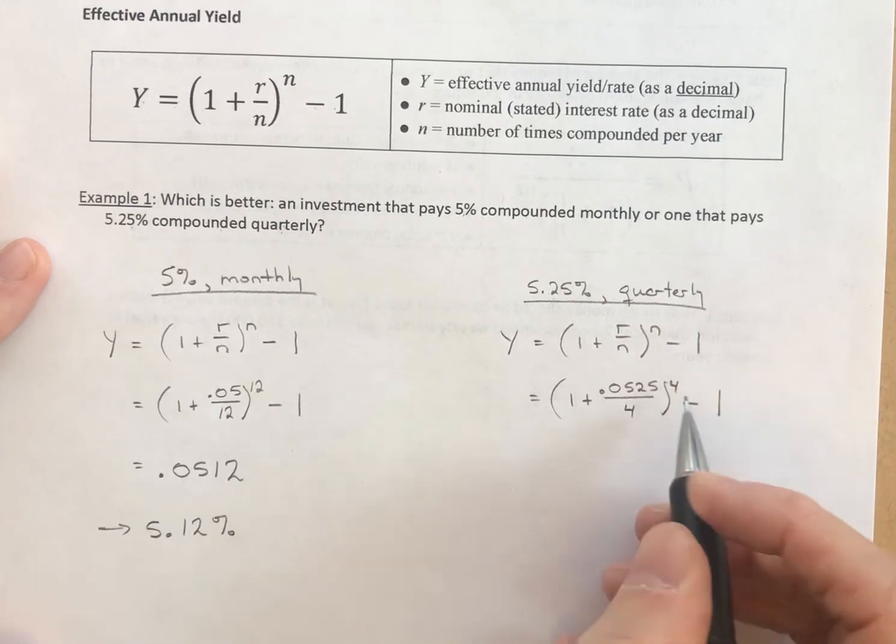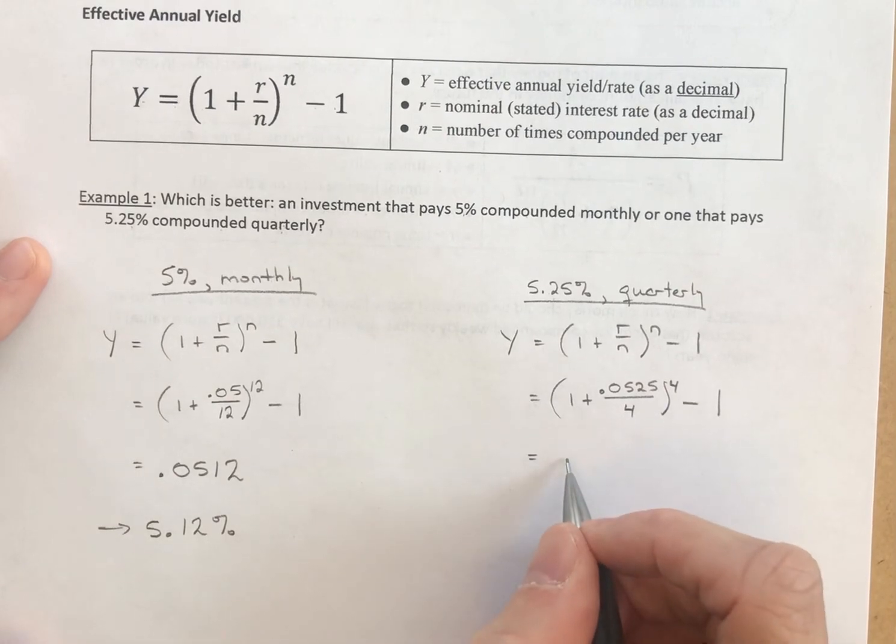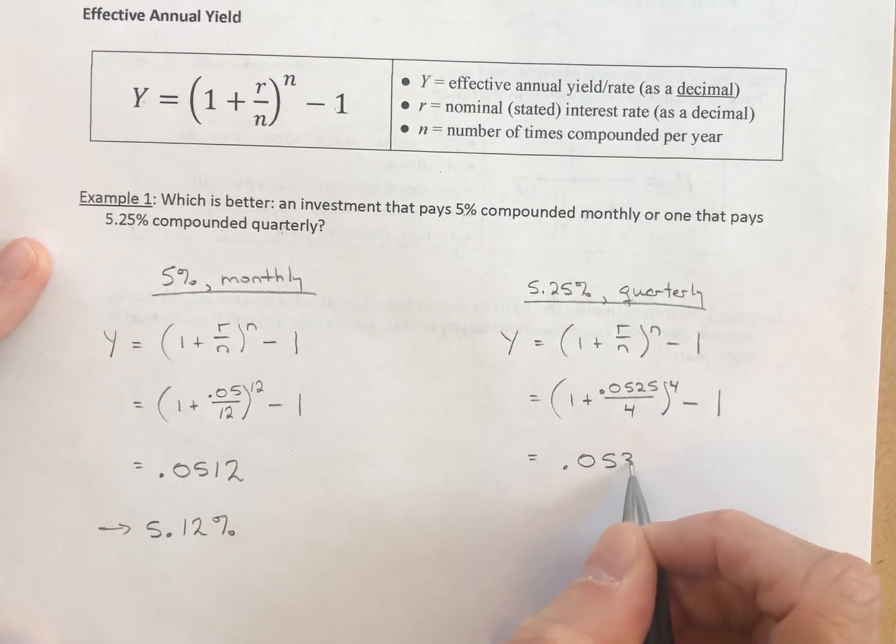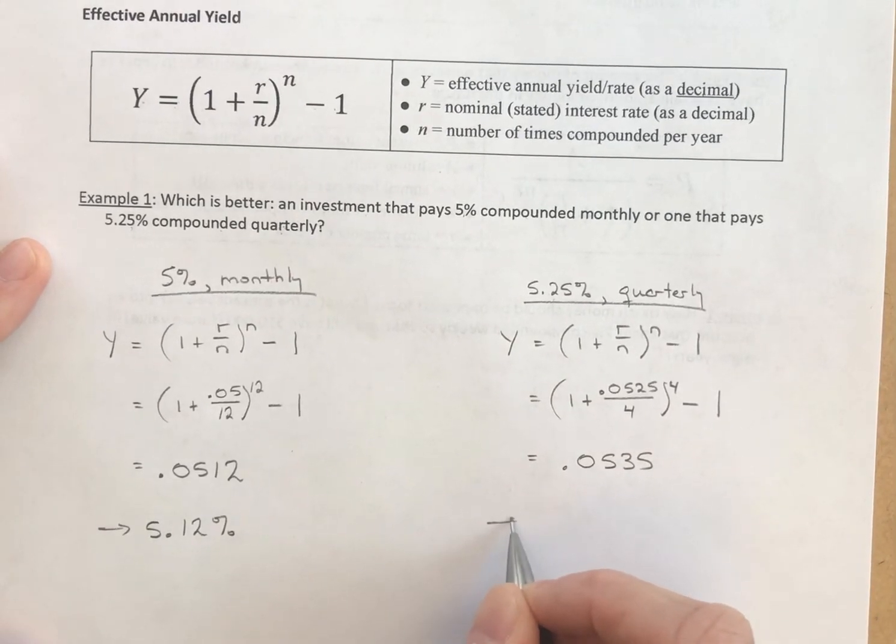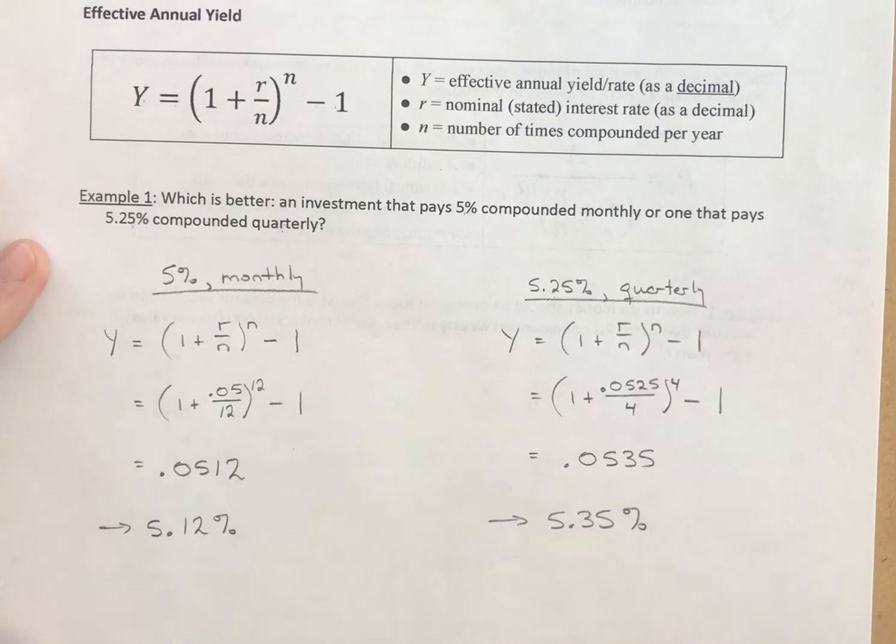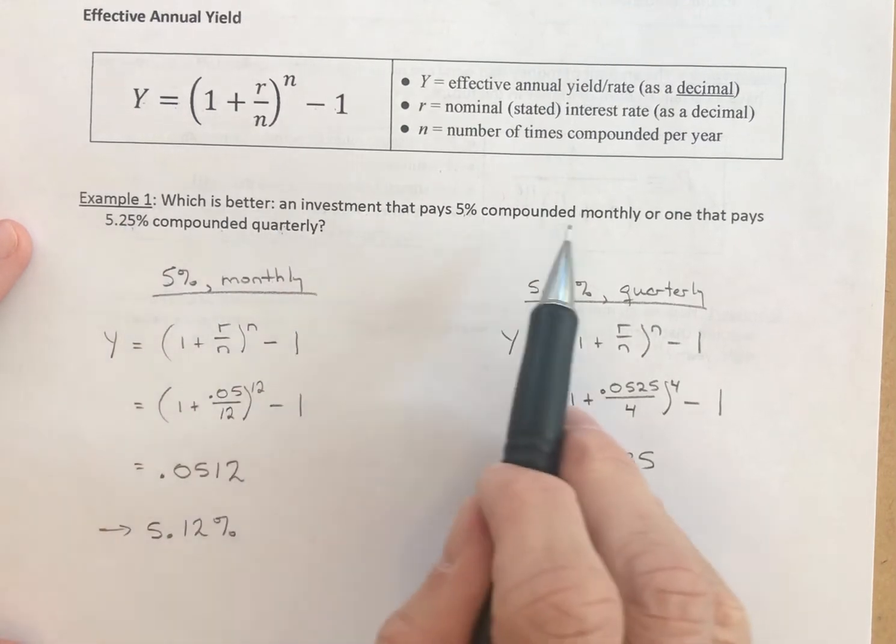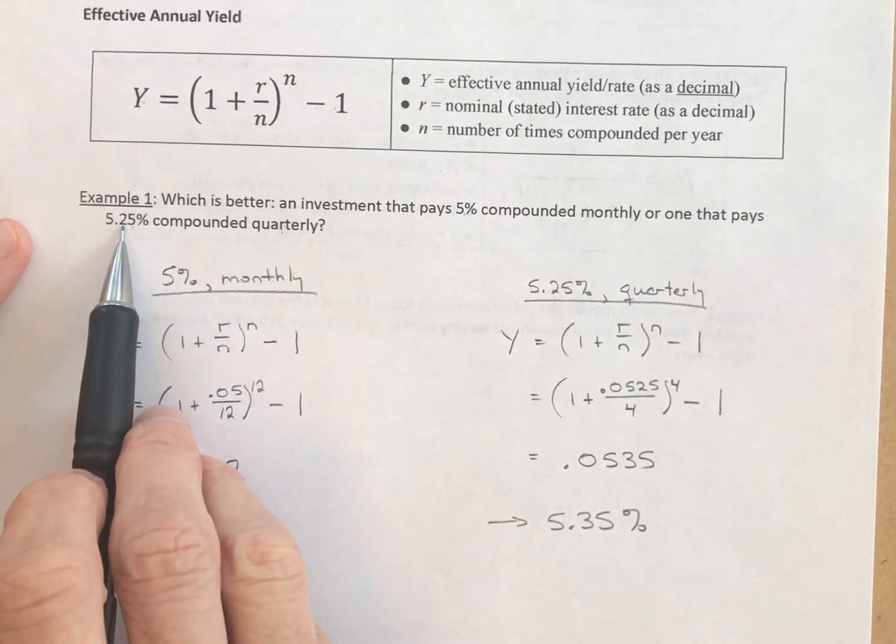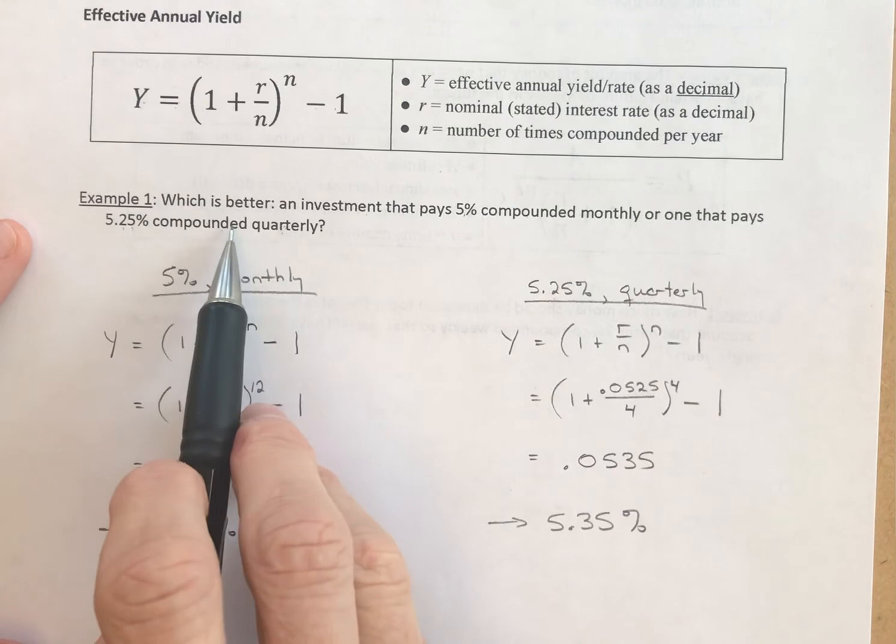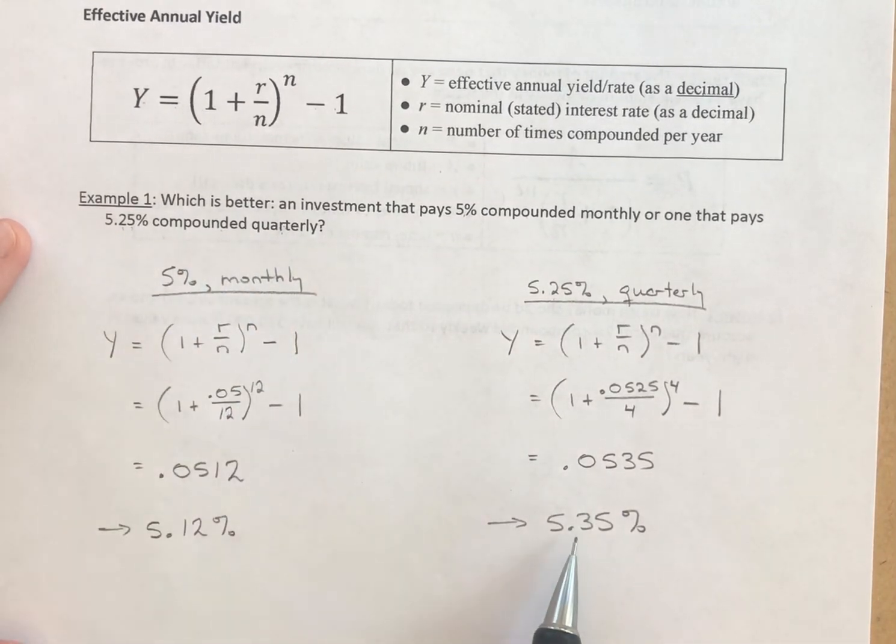Then I subtract 1 off of that calculation, and this one comes out to be approximately 0.0535, 5.35% as a percent. Again, the nominal rate, the advertised rate for this second investment was 5.25%. But when we compounded quarterly and added it all up, we actually came out with a 5.35% rate as its effective annual yield.